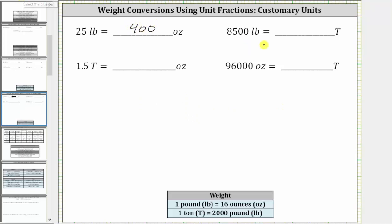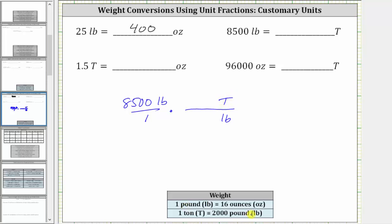Next we want to convert 8,500 pounds to tons. We begin by writing 8,500 pounds as a fraction with a denominator of one. Now we're going to multiply by a unit fraction. We form the unit fraction using the conversion one ton equals 2,000 pounds. Because we want pounds to simplify out, and right now we have pounds in the numerator, pounds must be in the denominator of the unit fraction and tons in the numerator. The unit fraction is one ton over 2,000 pounds.